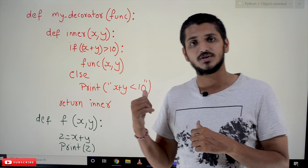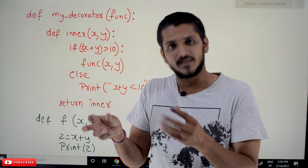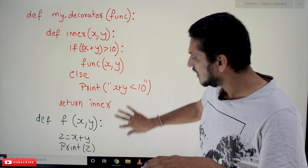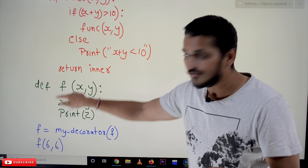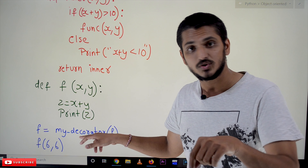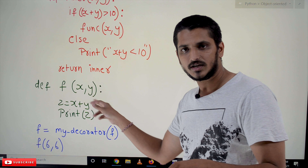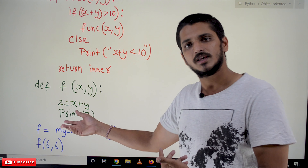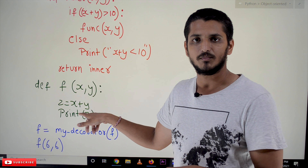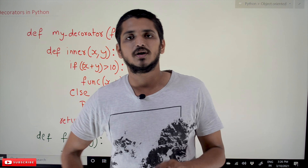What condition did we impose? If the sum of x and y is greater than 10, then do the addition; otherwise don't do the addition. That is the condition we imposed on function `f` without changing the functionality of this function. We could also write this condition inside function `f` itself, but why are we doing it in a separate function?